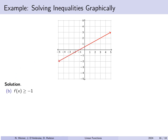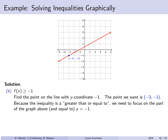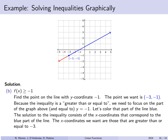For f(x) ≥ −1, we find where y equals negative 1 on the line, which is at x equals negative 3. Since we want y bigger than or equal to negative 1, we look at where the graph is above that point. The corresponding x-coordinates start at x = −3 and go to the right. Because the inequality includes equality, we include x = −3. The solution is x ≥ −3, or as an interval [−3, ∞).